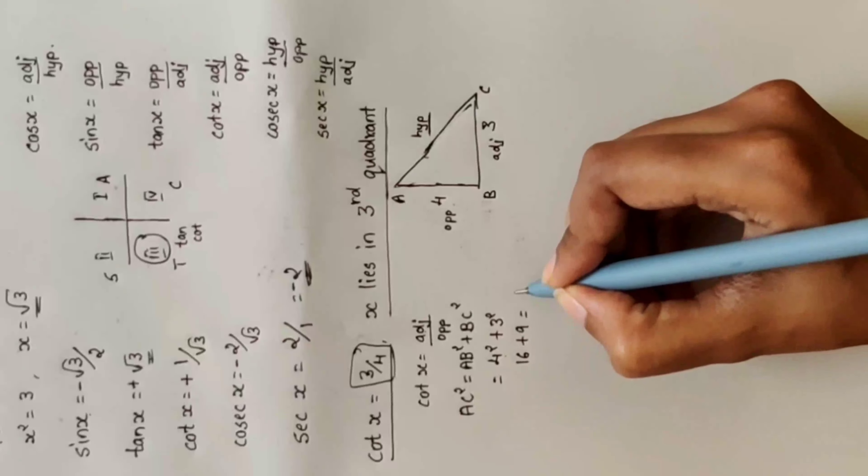13² = x² + 5², so x² = 169 − 25 = 144, and x = 12. So the opposite side is 12.